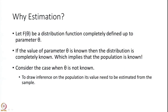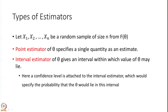If we know the parameter theta, we know the whole population. Therefore, we want to consider the case of theta not known and we would like to estimate theta in order to draw inference on the population. There are two types of estimators. One is called a point estimator, in which it finds a single quantity as an estimate for unknown parameter theta. While the interval estimator gives an interval within which theta may lie with a probability attached to it.